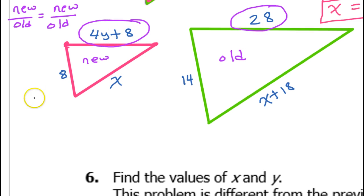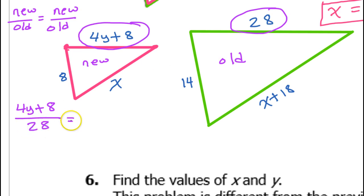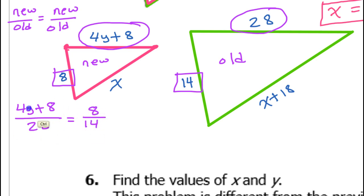Doing new over old gives me 4y plus 8 over 28. For the other fraction I need all numbers — no variables — so I'm going to consider the 8 and the 14. Again, new over old gives me 8 over 14. So I have: 4y plus 8 over 28 equals 8 over 14.